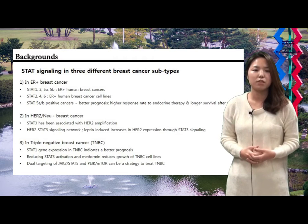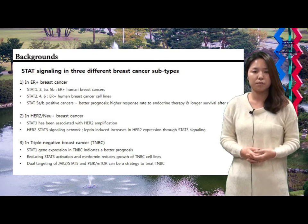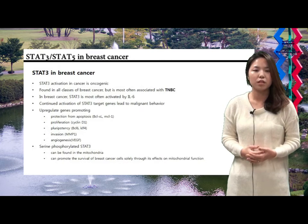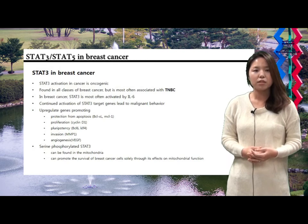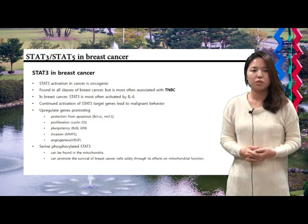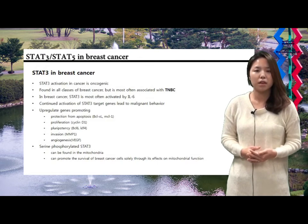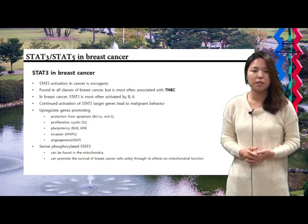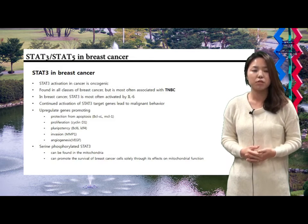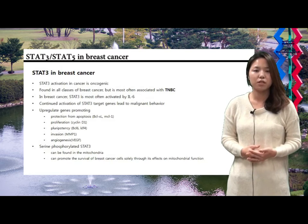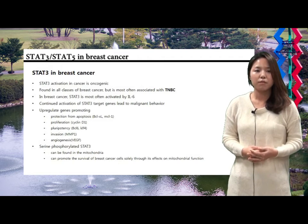The next paper deals with STAT 3 and STAT 5, specifically about their relationship in pathogenesis in breast cancers. STAT 3 has been known to have oncogenic activation in various types of cancers. In breast cancers, STAT 3 is most often associated with triple negative breast cancers. It is activated by interleukin-6, and continued activation of STAT 3 target genes leads to malignant behavior. The upregulated target genes by STAT 3 promote protection from apoptosis, proliferation of breast cancer cells, and lead to invasion and angiogenesis. Furthermore, serine-phosphorylated STAT 3, which can be found in the mitochondria, can promote the survival of breast cancer cells through its effect on mitochondrial function.